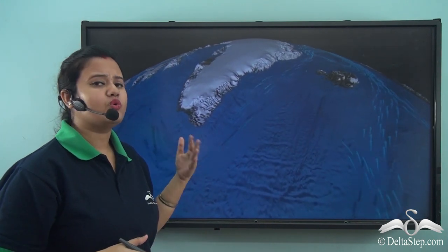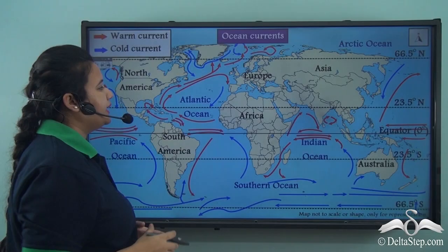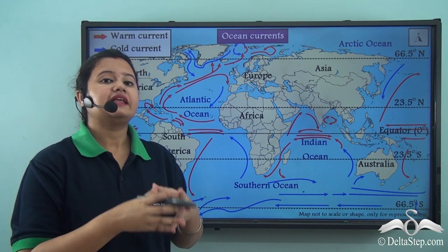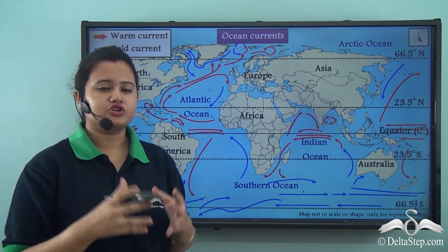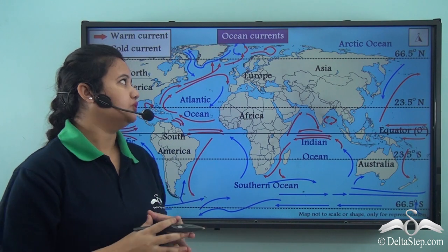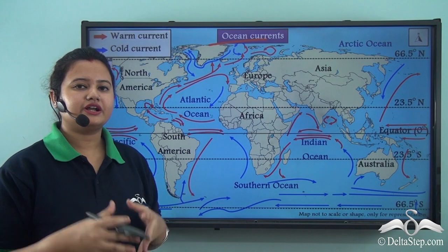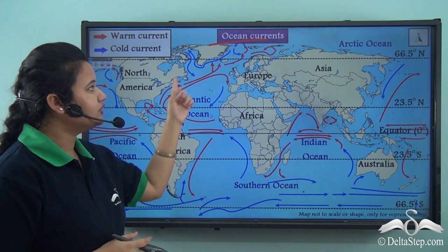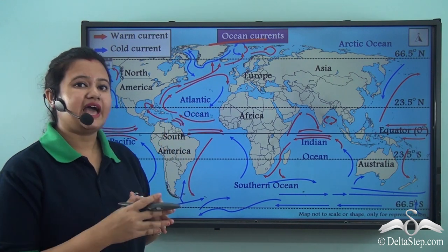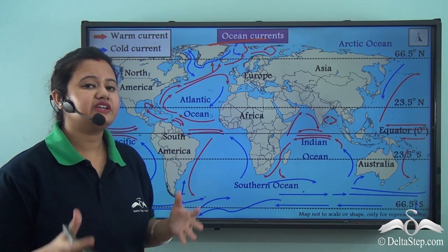Do you know what these circular motions are called? The continuous circular motion that occurs in large water bodies such as seas or oceans is known as ocean currents. Ocean currents refer to the circular patterns formed in water bodies as they move in a specific direction.